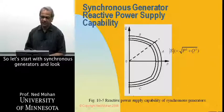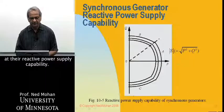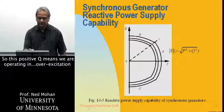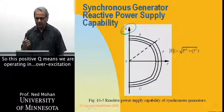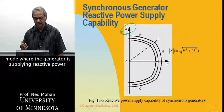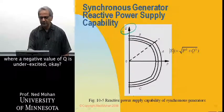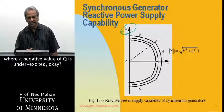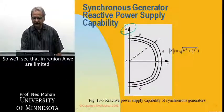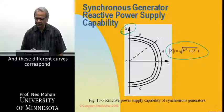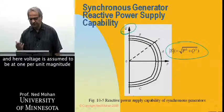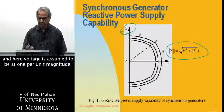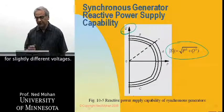Let's start with synchronous generators and look at their reactive power supply capability. Positive Q means we are operating in over-excitation mode where the generator is supplying reactive power, whereas negative Q is under-excited. In region A, we are limited by the heating of the machine. These different curves correspond to different hydrogen pressures for cooling, and voltage is assumed to be at one per unit magnitude, though similar curves can be obtained for slightly different voltages.